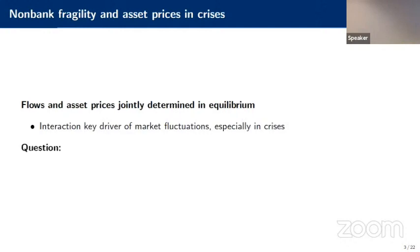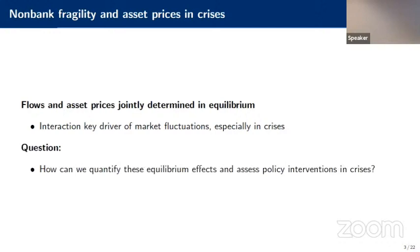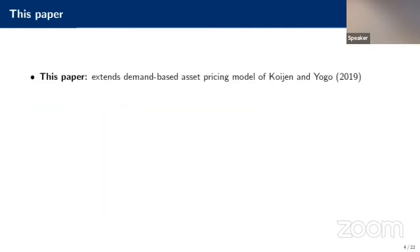So in this paper, what we're going to do is ask: how can we quantify these equilibrium effects, disentangle them, and think about assessing policy interventions in times of crisis? Specifically, we're going to extend the demand-based asset pricing model that Ralph and Modo have developed, and endogenize the distribution of wealth across funds.